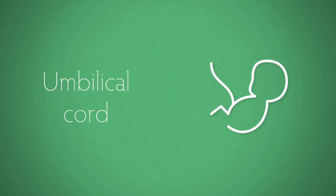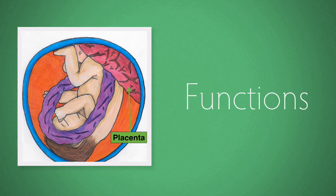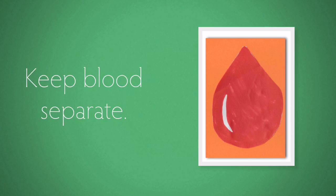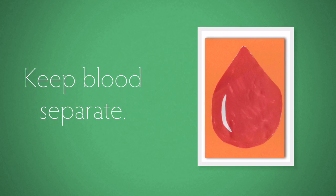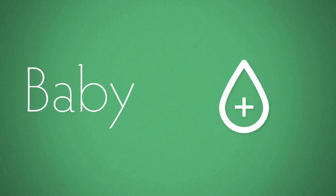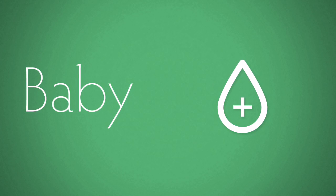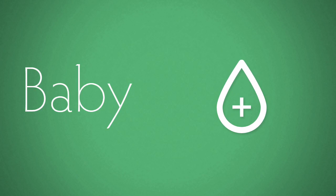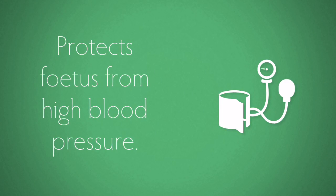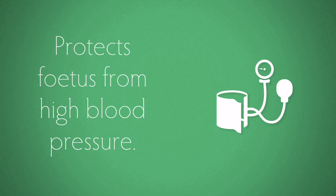The umbilical cord links the embryo with the placenta. The placenta will be fully functional by the third month of pregnancy. One key function is that it keeps the blood supply of the mother and the baby separate, which is very important in case of a compatibility issue. For example, if the mother has rhesus negative blood and the baby is rhesus positive, mixing of the blood would cause the mother to form antibodies — essentially her immune system attacking the baby's blood. Separation also ensures the mother's high blood pressure does not damage the fetus.